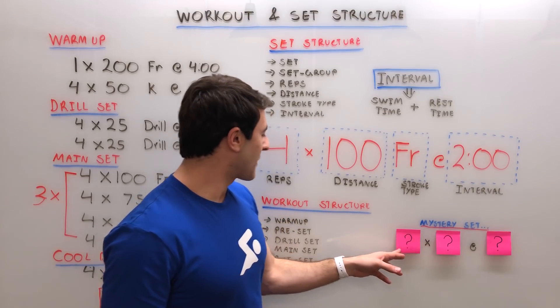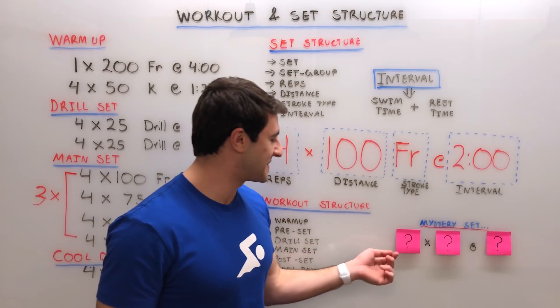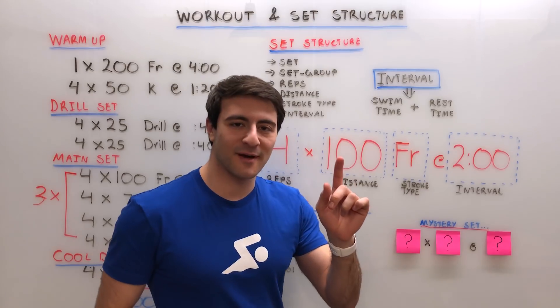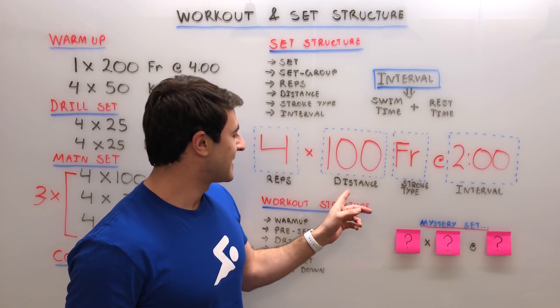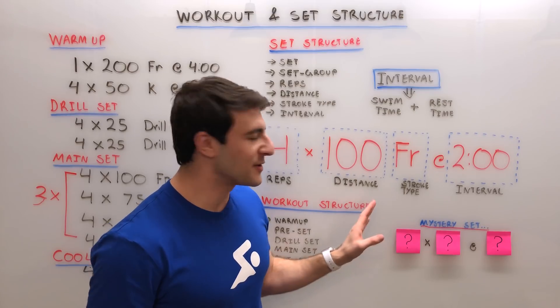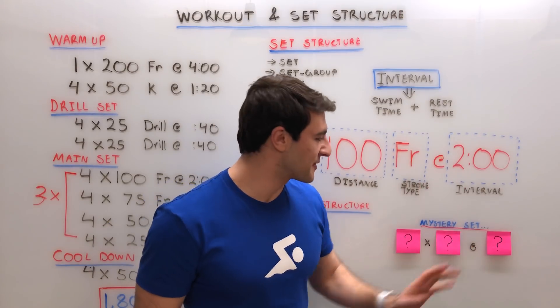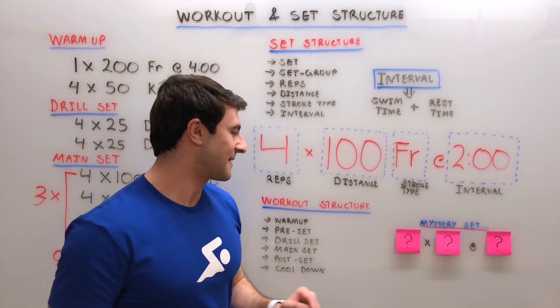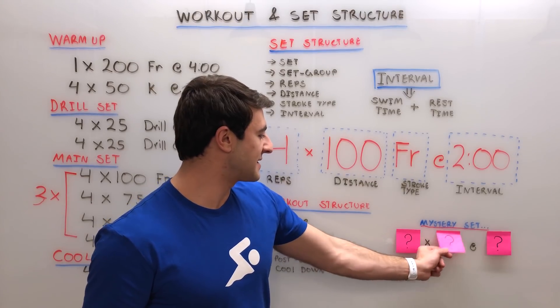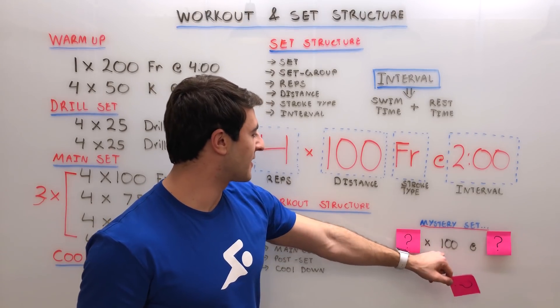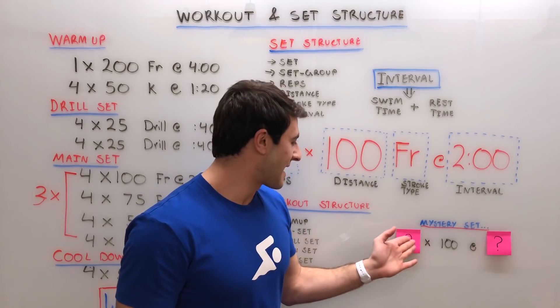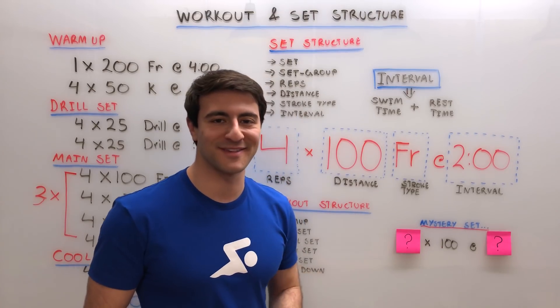The first part represents the total number of reps. Instead, I'm going to unveil the second part, which represents the distance. Now if you notice, I left out the stroke count because for this set, we're going to assume freestyle. So if we remove this, it looks like we're doing 100. So that's the distance. Now the question is, how many 100s are we going to do?